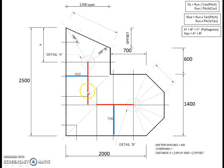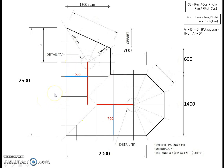If you grab these figures and use the formula at the top, this will give you the geometric length of these rafters. We're going to use a roof pitch of 30 degrees. Pause the video and run that through the formula with 30 degrees and have a go at working it out. The answer I've got is 751 for the minor common rafter and 808 for the major common rafter.